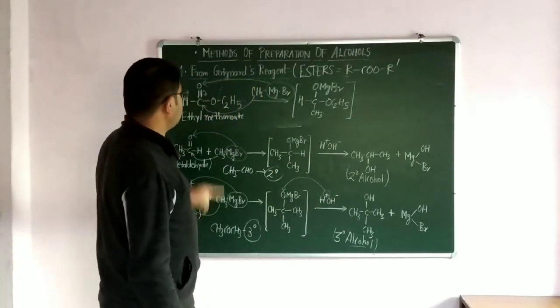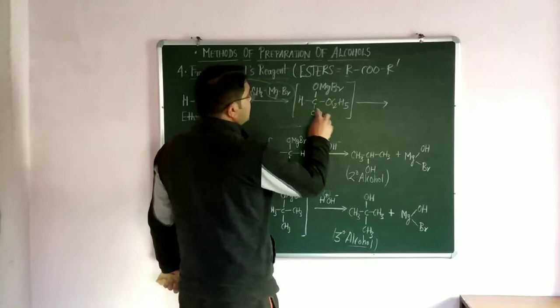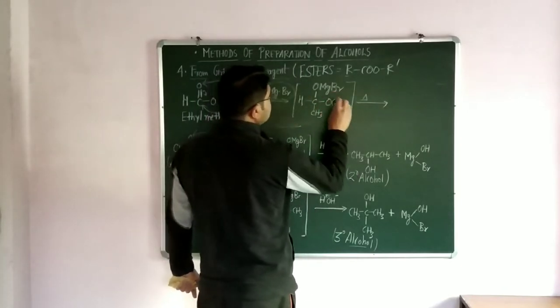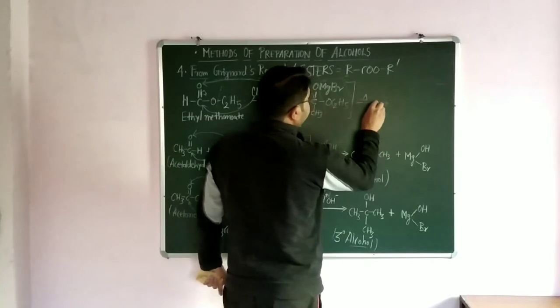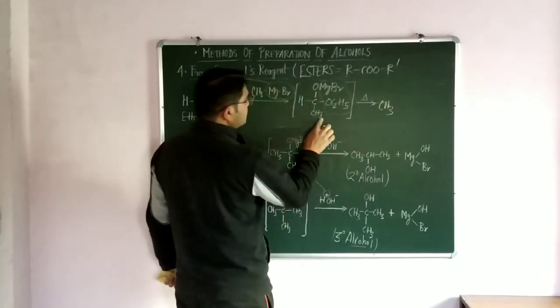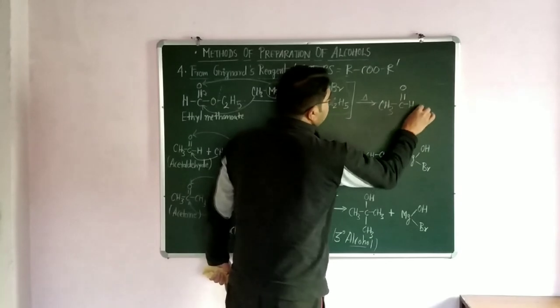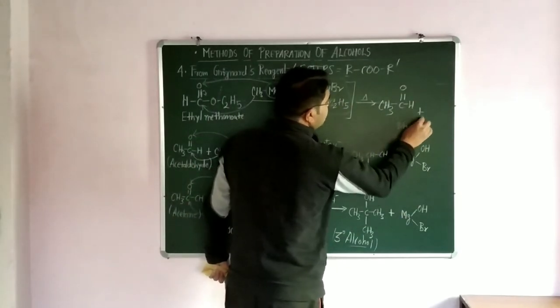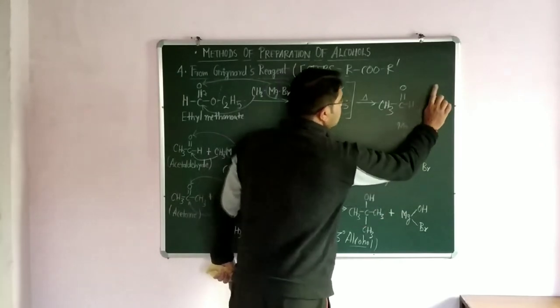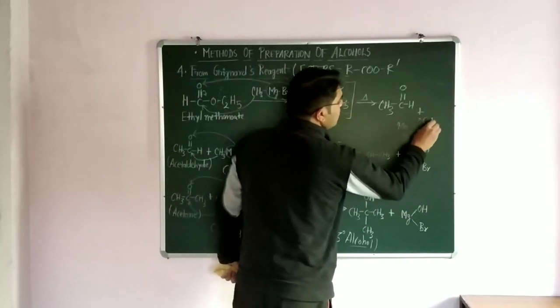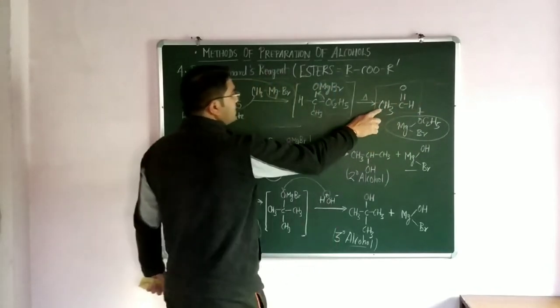This is the extra step here when esters are treated with Grignard reagent. Then again, upon heating it loses the whole part as a by-product, and the main form here is CH3CHO. This bond migrates here and it forms CH3CHO with the elimination of, in previous case, OH-MgBr was out, but in this case OC2H5 with MgBr.